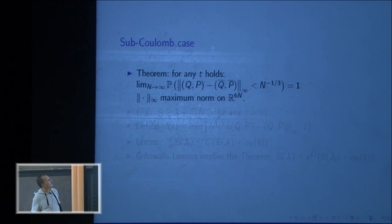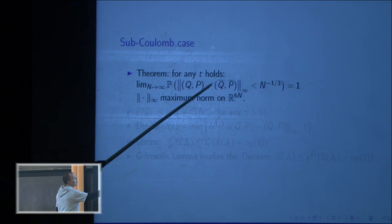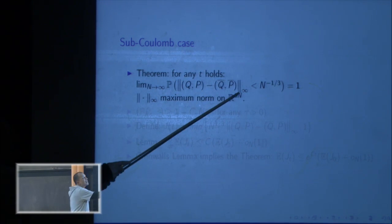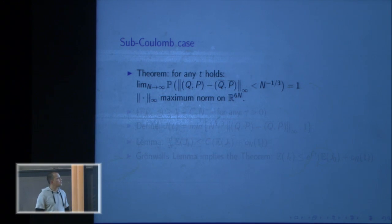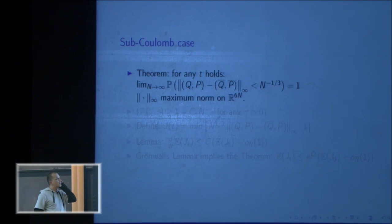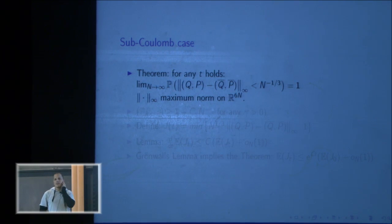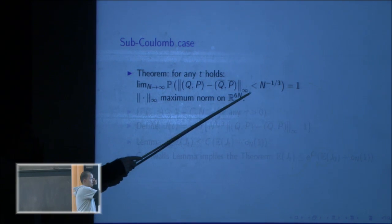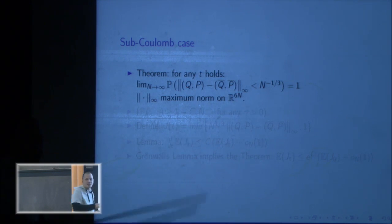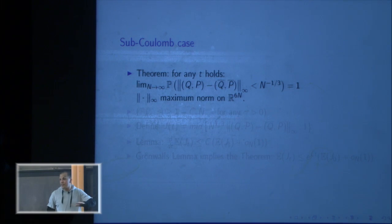Now comes the main theorem for today, in the sub-Coulomb case. I want to show that for any t, with probability going to 1 as N → ∞, the true trajectory (q(t), p(t)) is within N^{-1/3} of the auxiliary trajectory (q̄(t), p̄(t)) in the sup-norm. This is a surprisingly strong result: the sup-norm means that even a single particle escaping by more than N^{-1/3} would be a failure — yet we can prove this happens with probability going to zero.